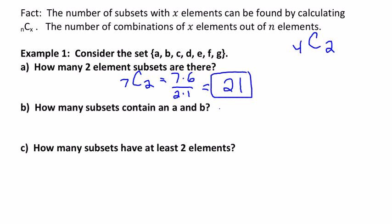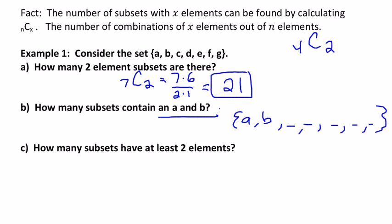How many subsets contain an A and a B? This problem — you could struggle trying to think of the best way to count these, until you realize that A and B are just automatically in our subset. So we think of A and B as automatically being in the subset, and then look at the other five letters, choosing for each whether they are on or off. That means there are two options for each one, so 2 × 2 × 2 × 2 × 2 = 2^5 = 32 subsets containing A and B, because there are 32 ways to choose whether C, D, E, F, or G are in that set.